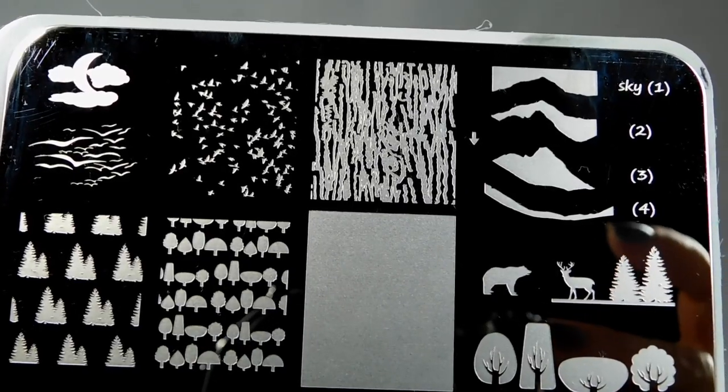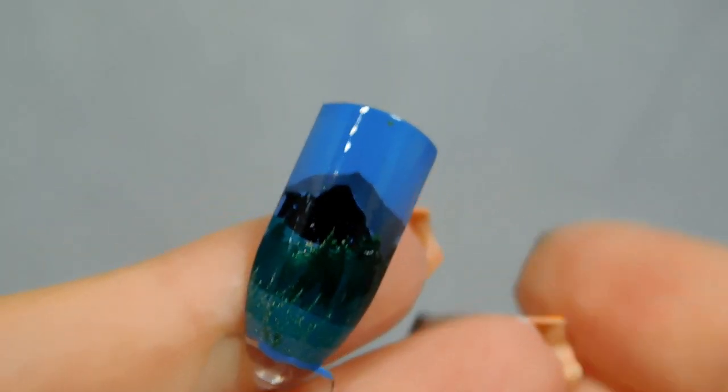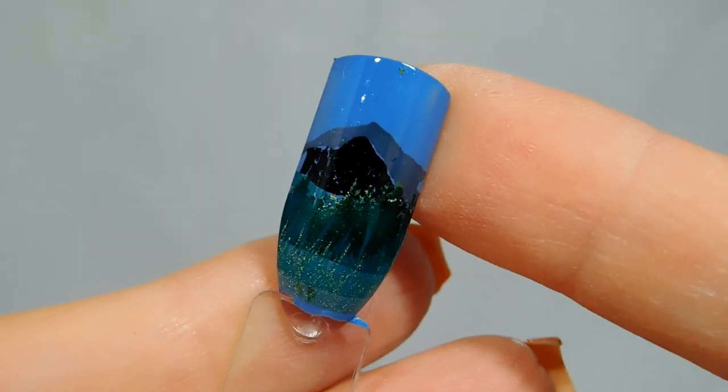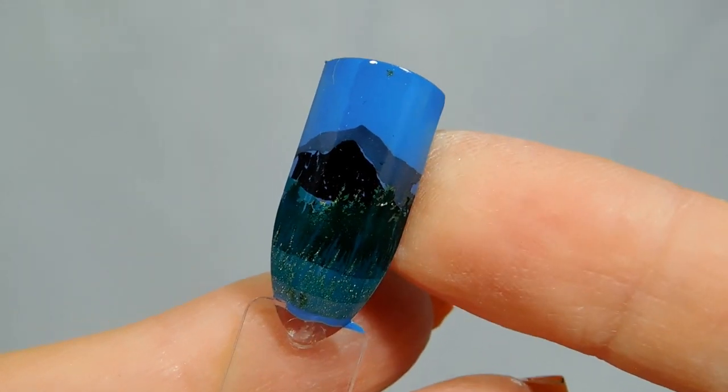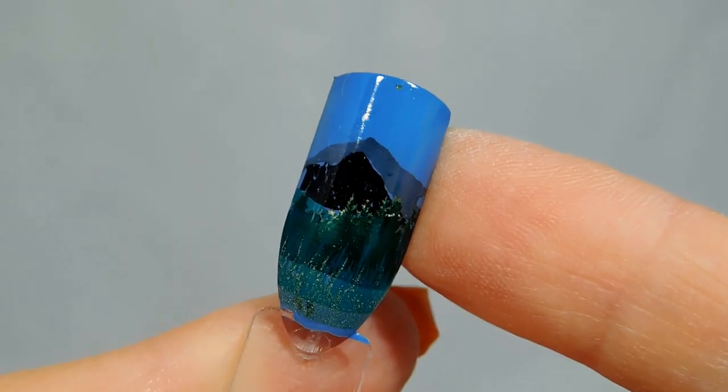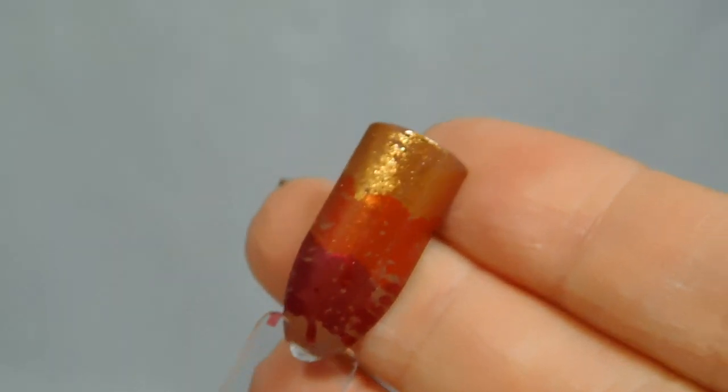All right, let's take a look at the sample looks I did. So this one, I wanted to try out that mountain building scene. So I did a little bit of sky, a little bit of mountains, a little bit of foliage. There are some trees and some grass.